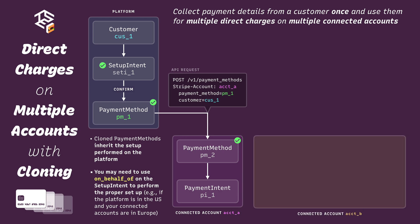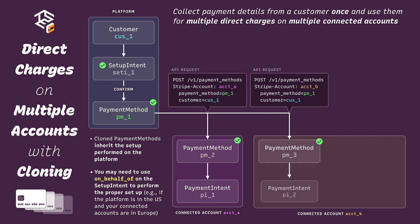Now let's look at a second connected account, account B. What if we also want to use the same payment method from the platform to create a direct charge on this other account? It works basically the same way, starting with the same API request to clone the payment method, with the only change being the account ID we specify in the Stripe account header. Once this API request succeeds, we have another new cloned payment method, PM3, on account B. This payment method has also inherited the setup from the platform, so we can then create a direct charge the same way.